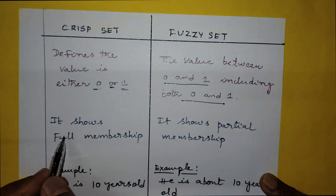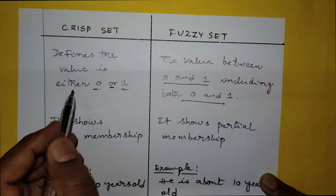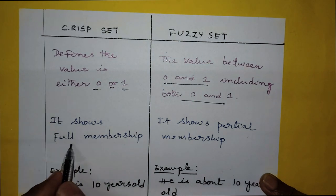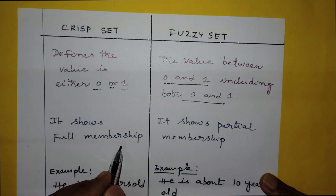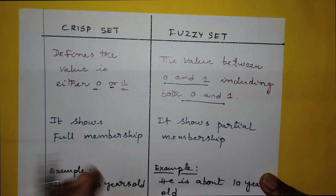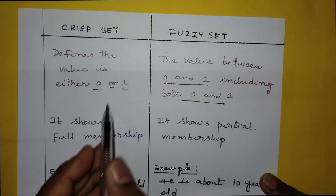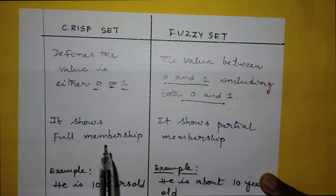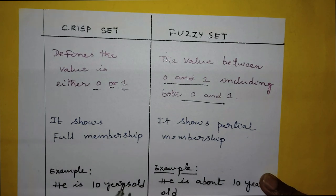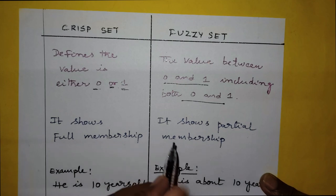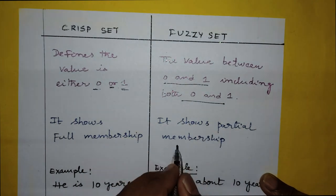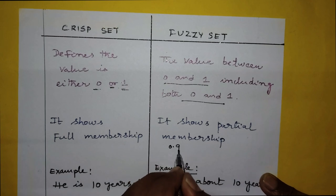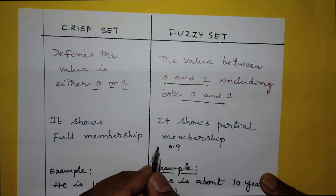Crisp set shows full membership. Full membership means 1 means full membership and 0 means no membership. But fuzzy set values can represent both full membership and partial membership. Partial membership means the fuzzy value is somewhere between 0 and 1 — for example, 0.9 — which is called partial membership.